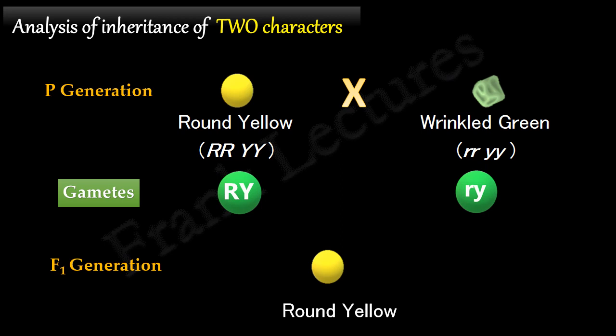So the genotype of F1 individual will be capital R, small r, capital Y, small y.